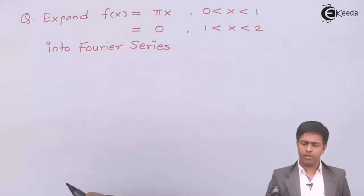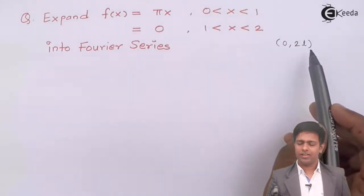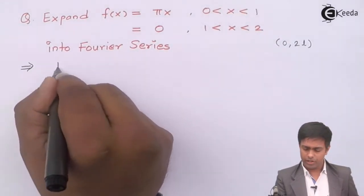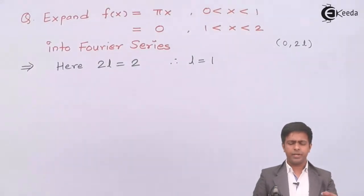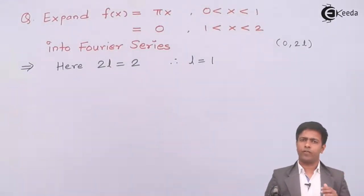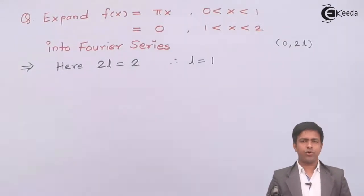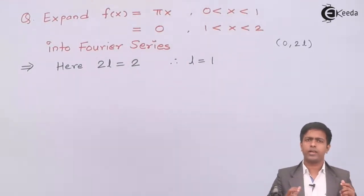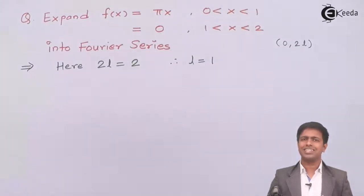We use the formula for range 0 to 2l. Comparing our range 0 to 2 with 0 to 2l, we get 2l = 2, therefore l = 1. So we have to find the Fourier series for f(x) in the range 0 to 2l. The formula has been covered in the previous video, so please refer to that for the derivation details.